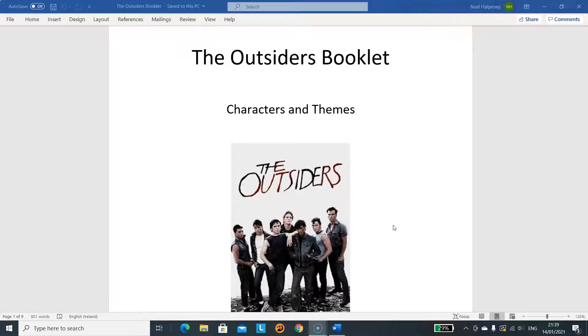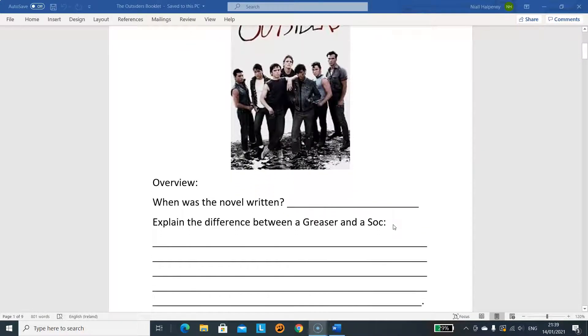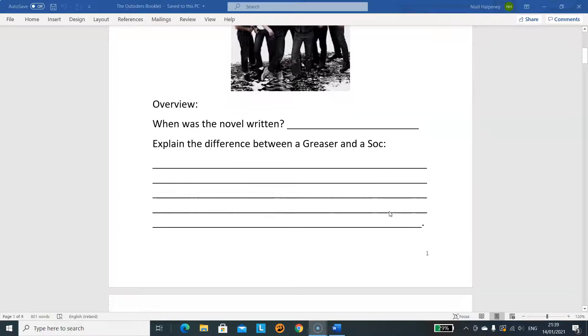Just a quick run-through of what the booklet is, what type of questions are in it, and how to approach answering it. The first page is quite simple: it says The Outsiders Booklet, Characters and Themes. Then there's a short overview with questions here. Really simple: who was the novel written by? If you don't know it, you need to go and research that. Then explain the difference between a greaser and a soc. If you can't remember, this is one of the central concepts of the novel, so you really need to be very clear that you know the difference.